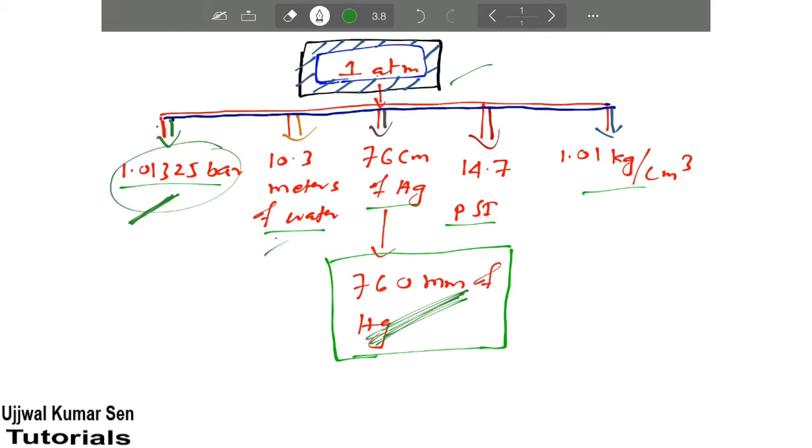We don't know about this one, this one, and this one. I will tell you everything here. So one atmospheric pressure is equal to 1.01325 bar. And what is bar? Bar is basically a unit of pressure.